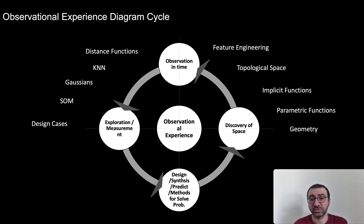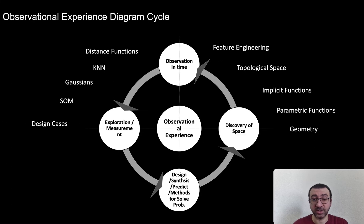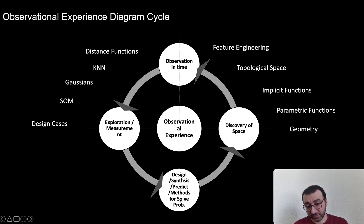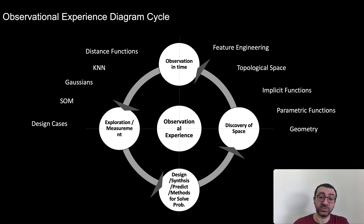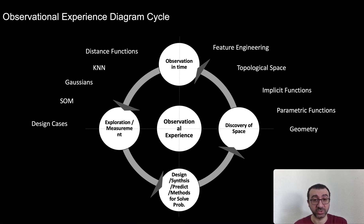These topics we will learn together in the next lectures — about geometry, parametric functions, implicit functions, topological spaces, feature engineering, and algorithms like k-NN and others. In every step we will say: now we are discovering the data, now we are measuring distances. We will know where we are in the loop. If you reach the problem-solving step and the results are not good enough, you can start again — rediscover the space, refine observations, and refine the outputs to get proper results.